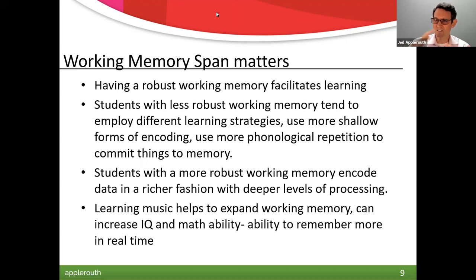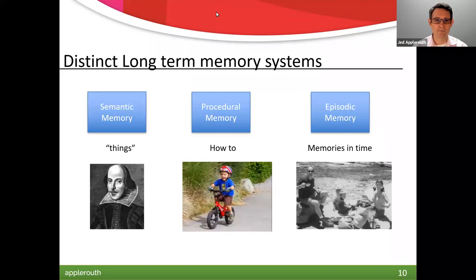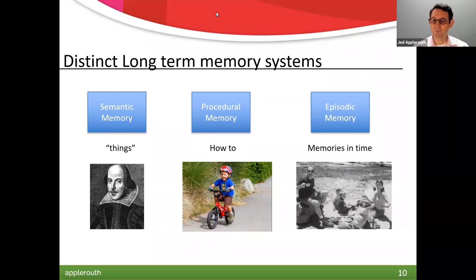There are different memory systems. Semantic memory is factual knowledge — this is a ball, this is a cup. Procedural memory is knowing how to do things — how to ride a bike, how to brush your teeth — things that are just in there and you don't forget. Episodic memory is what happened to you in time. When you have different brain challenges or lesions, these can affect different systems. Often someone has a very robust procedural memory — they know how to do something — but they've forgotten a lot of their episodic memory.